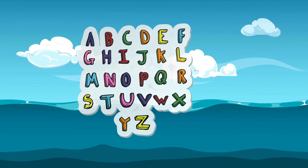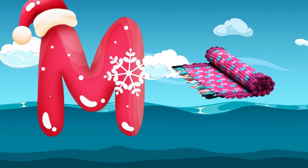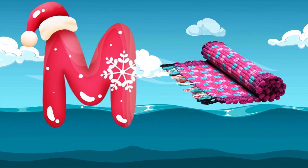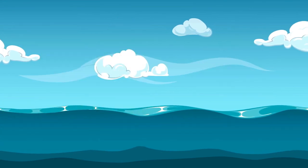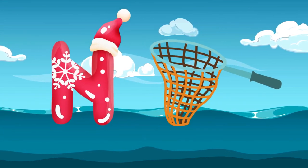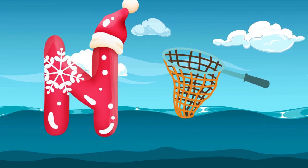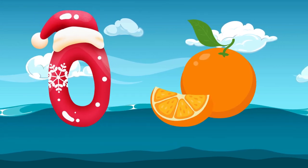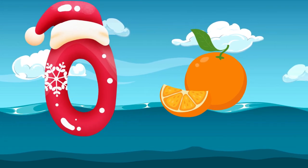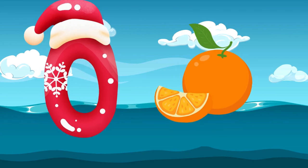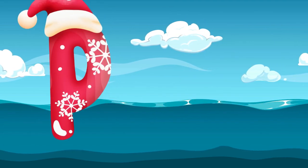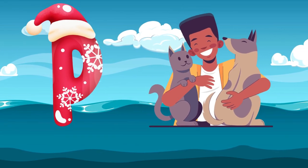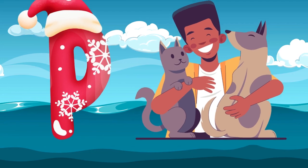M is for mat, m-m-mat. N is for net, n-n-net. O is for orange, o-o-orange. P is for pet, p-p-pet.